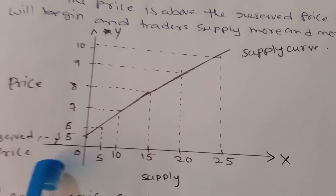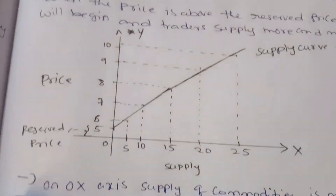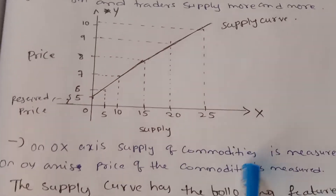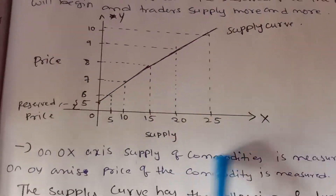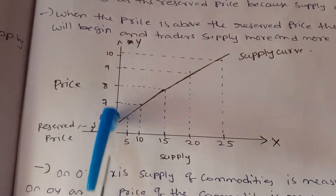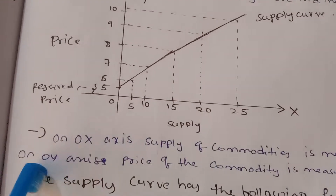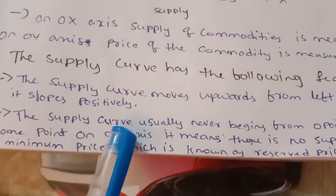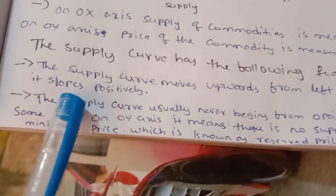We can draw the supply curve, which is upward sloping. On the OX axis, supply of commodities is measured. On the OY axis, the price of the commodity is measured. The supply curve moves upward from left to right, sloping positively.